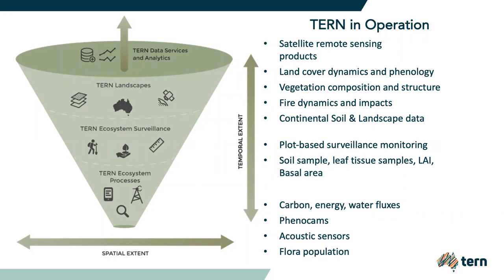The second level of observations are regional scale surveillance monitoring with site-based surveys performed across the Australian landscape. We have around 800 plots covering most of the terrestrial biomes, collecting vegetation and ecological processes related data.